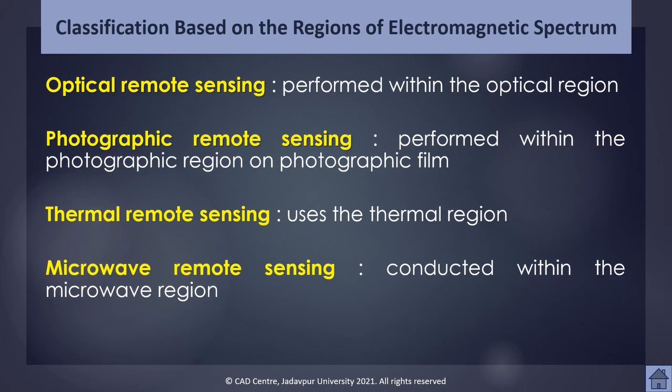Optical and photographic remote sensing record reflected energy from the earth's surface and generally use the sun as the source of energy. Thermal and passive remote sensing use emitted energy from the earth's surface. Active microwave remote sensing projects artificially generated energy onto the earth's surface and then the backscattered energy is recorded by the sensor. Backscatter is the term given to reflections in the direction opposite to the incident of active microwave rays.